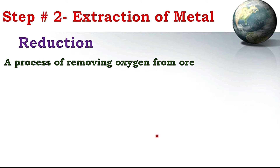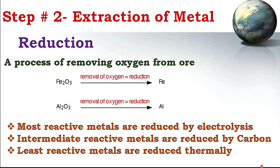Another common method for extracting metal is reduction — a process of removing oxygen from ore. Many ores are bonded with oxygen; for example, iron ore is hematite with formula Fe2O3, from which oxygen is removed to give iron. Aluminium ore is bauxite, also bonded with oxygen, which is removed to give aluminium. Most reactive metals are reduced by electrolysis, intermediate reactive metals such as iron are reduced using carbon, and less reactive metals are reduced thermally.